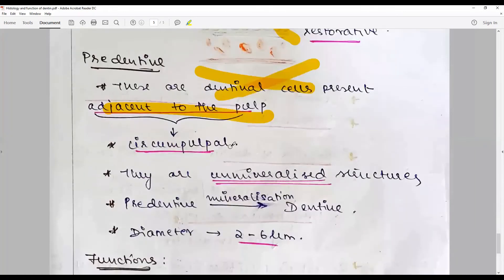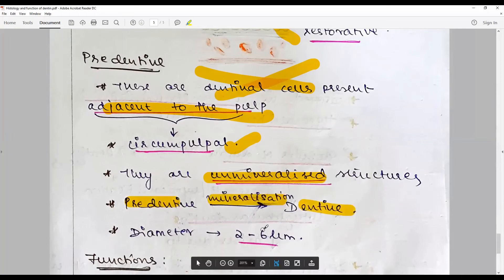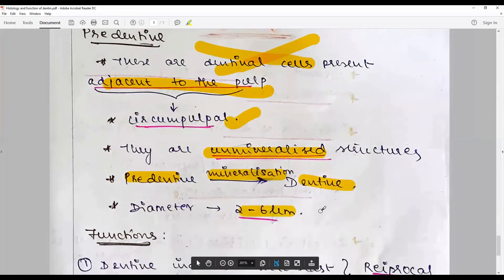Predentine is very close to the circumpulpal dentine. They are unmineralized dentin; when mineralized it becomes dentin. The diameter or thickness is about 2 to 6 micrometers.